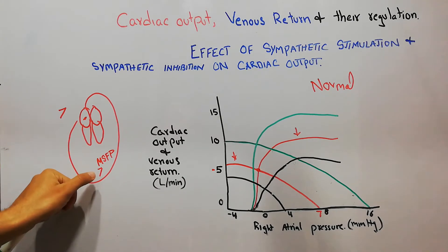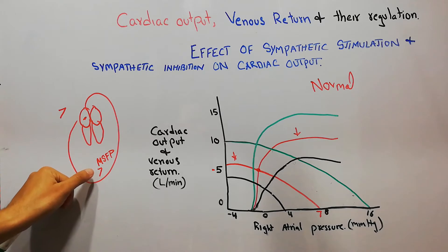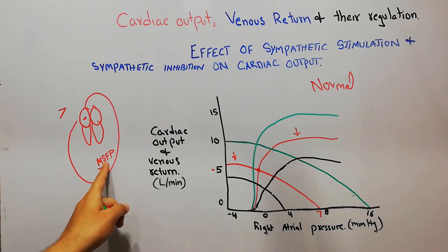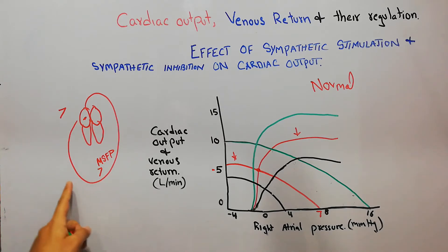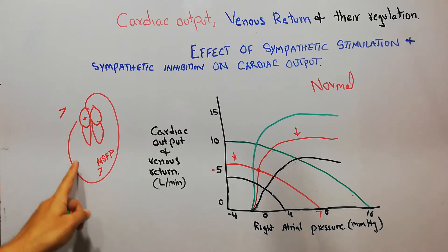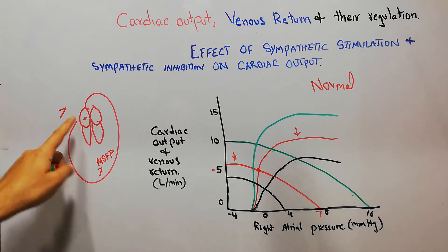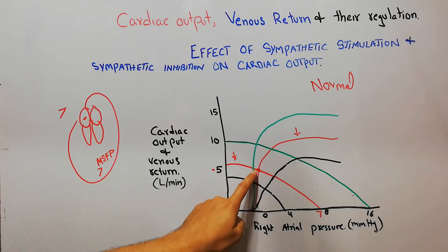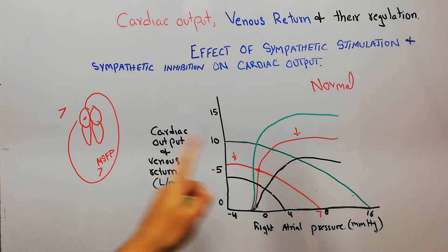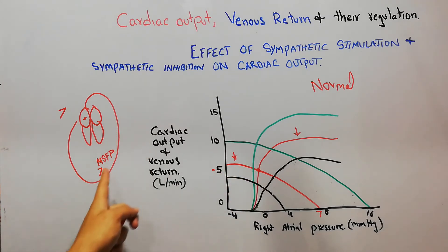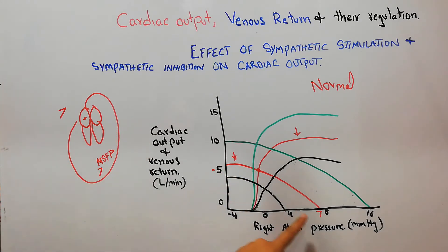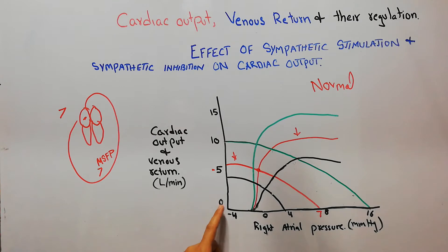When right atrial pressure reaches 7 or more than 7 millimeter of mercury, it is no longer able to push more blood to the heart, so venous return — the amount of blood returning to the heart — becomes zero at that level.